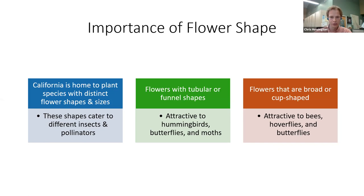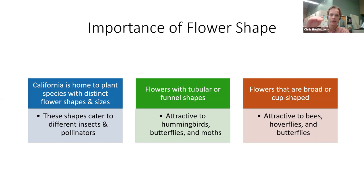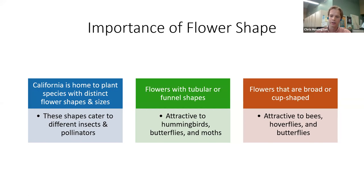Other than tube and funnel shaped flowers, you have flowers that are more broad or cup shaped — like sunflowers, asters, daisies, and poppies. These are going to be more attractive to pollinators that actually sit on the pad of the flower: species like bees, hoverflies, butterflies, even wasps and beetles. These broad and cup shaped flowers are really attractive to them so they can sit on the flower pad and collect pollen and nectar.